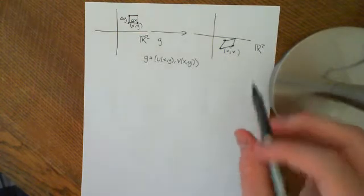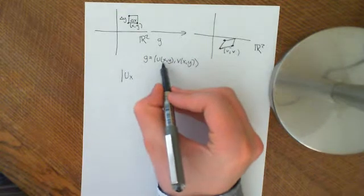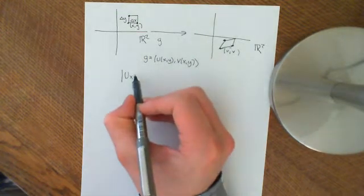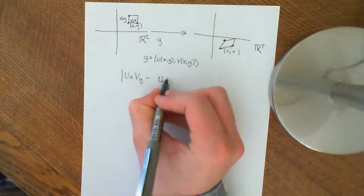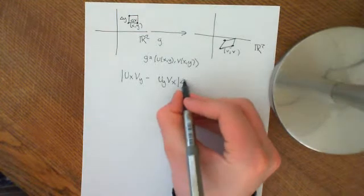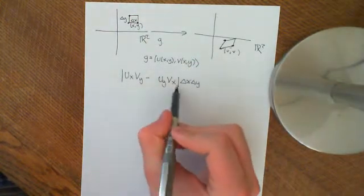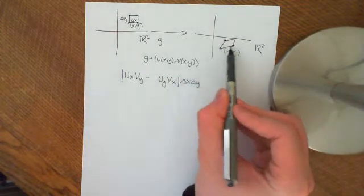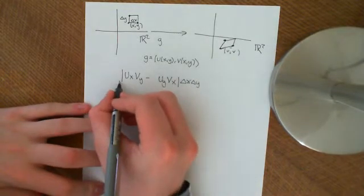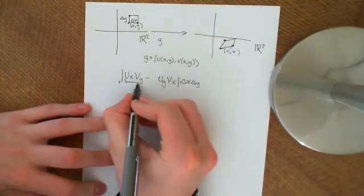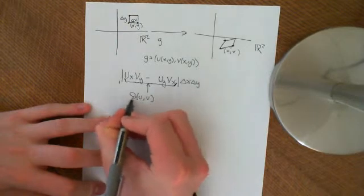What we then did is calculate that the area of this parallelogram is given by ux — the partial derivative of the u component with respect to x — times vy, minus uy times vx, and then multiplied by delta x, delta y. So delta x delta y is the area of this little box, and this expression is the correction factor to turn it into the area of the parallelogram. The bit inside the modulus sign has a name: it is called the Jacobian of uv with respect to xy.